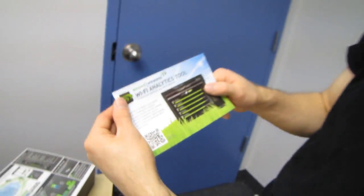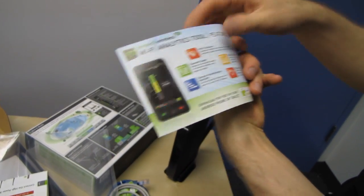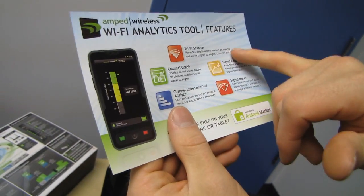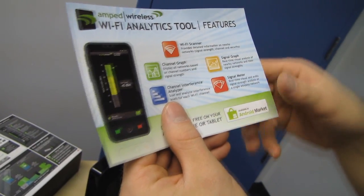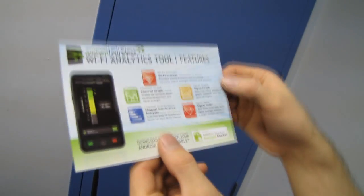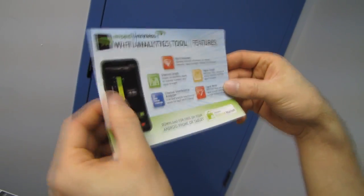Wi-Fi analytics tool. So there's your free download. Wi-Fi scanner to show nearby networks. Channel graph, displaying the channel numbers so that you can select the right channels with the least interference. Channel interference analyzer, signal graph and signal meter. Very cool.